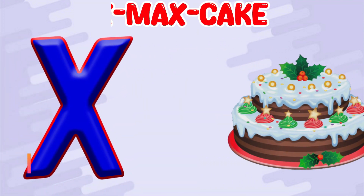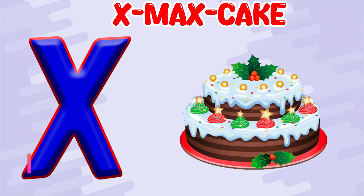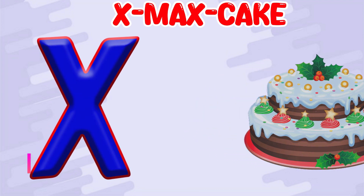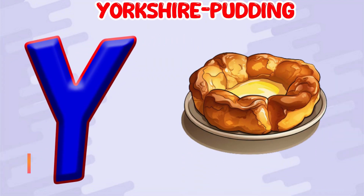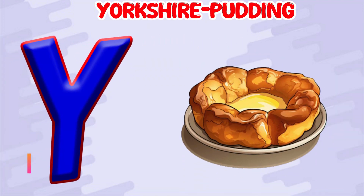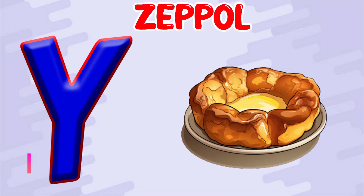X is for X-Moss Cake. X. X-Moss Cake. Y is for Yorkshire Pudding. Y. Yorkshire Pudding. Z is for Zeppo. Z. Zeppo.